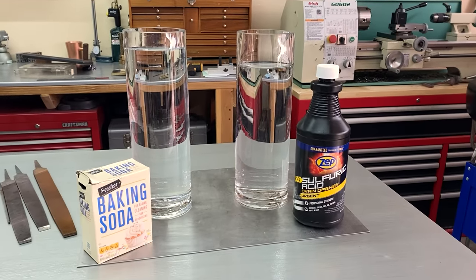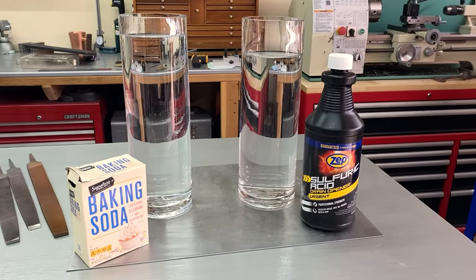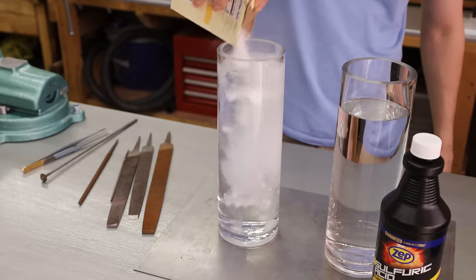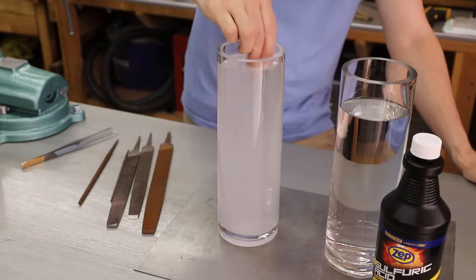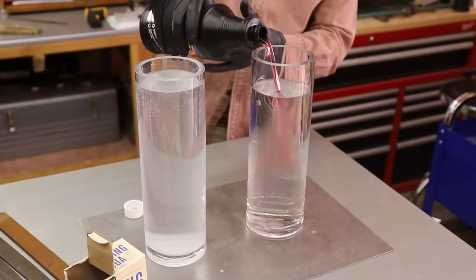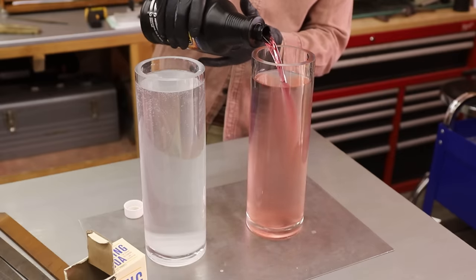First I tried sharpening the files in sulfuric acid. I mixed a container with baking soda and water to neutralize the acid, and then I made a dilute solution of sulfuric acid, about 10 parts water to one part acid.